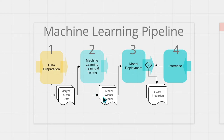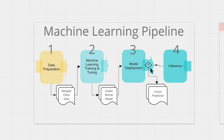The leader or winner model which comes out as the output from stage number 2 is the input for stage number 3, the model deployment stage. The leader model is deployed at stage number 3 where it is ready to perform scoring or prediction, which is part of stage number 4 — the inference stage. Here, incoming data is passed to the scoring or prediction service created in combination with the model deployment stage, and a score or prediction is generated as the output.